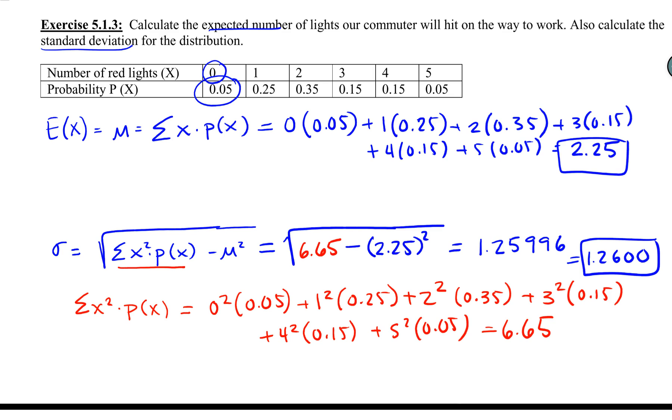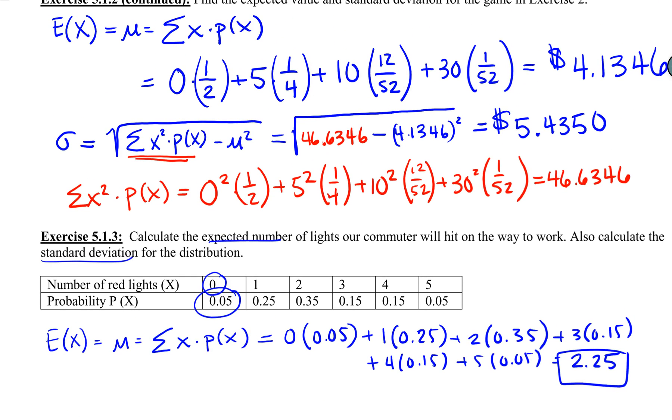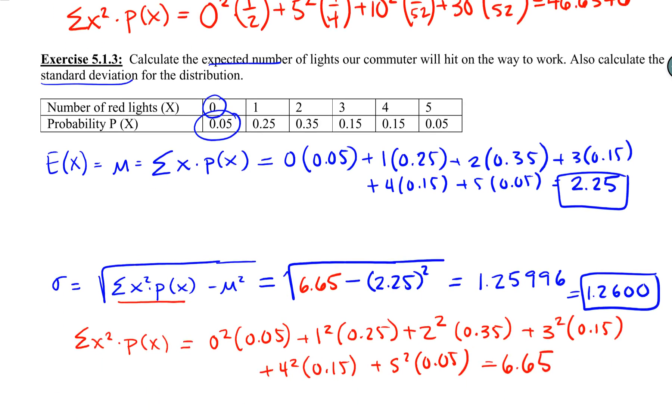Just because we're counting whole numbers doesn't mean the expected value is a whole number. We want to keep all those decimal places. In the previous example with dollars, I did not round to $4.13. I kept all four decimals because we're talking about an average.